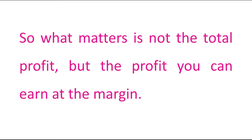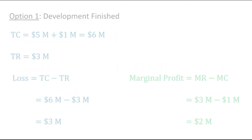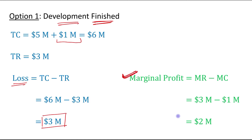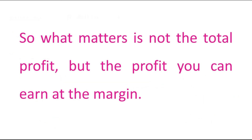What matters is not the total profit, but the profit you can earn at the margin — the marginal profit. Because when we finish the development and make this additional investment, we do face a total loss of $3 million. But we should focus on the marginal profit, which is $2 million. That is the reason we should make this additional investment and finish the development. What matters is not the total profit, but the marginal profit.